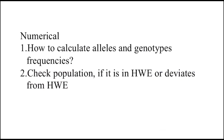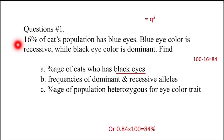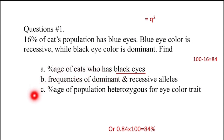From numericals we shall learn how to calculate allele and genotype frequencies and how to check whether a population is in HWE or deviates from HWE. Question 1: 16% of the cat population has blue eyes. Blue eye color is recessive while black eye color is dominant. Find: A) the percentage of cats who have black eyes, B) the frequencies of dominant and recessive alleles, C) the percentage of the population heterozygous for the eye color trait. The information given is the percentage of the recessive population, i.e., Q² = 16%.